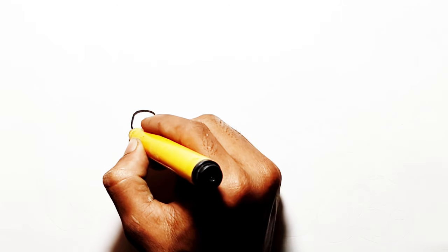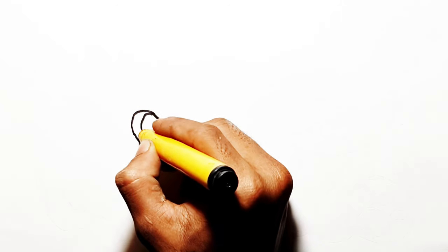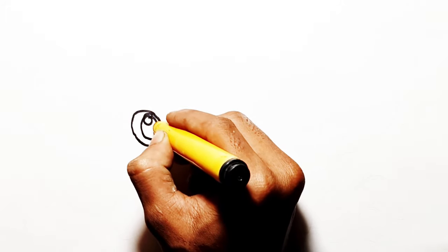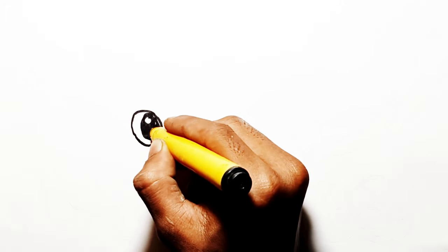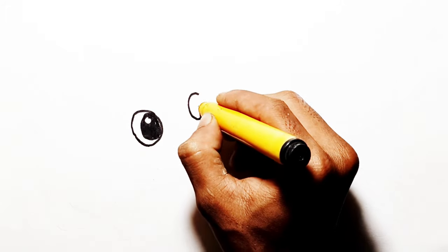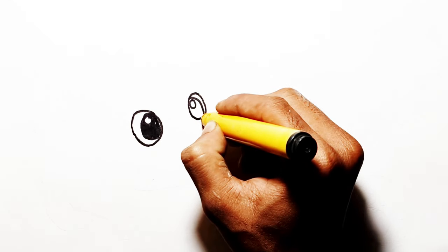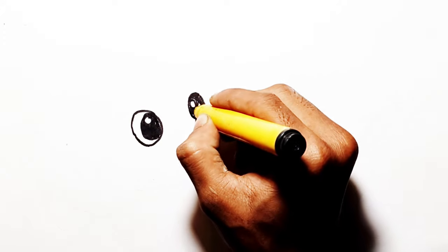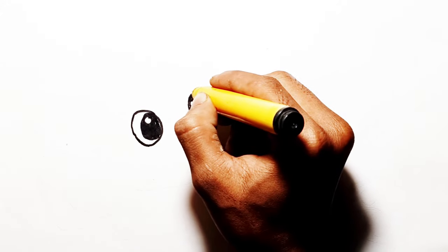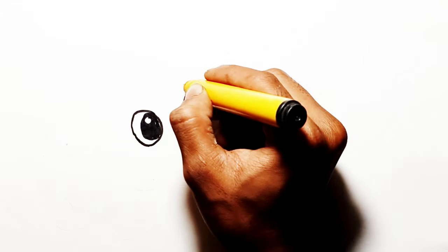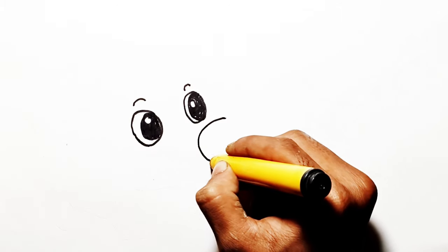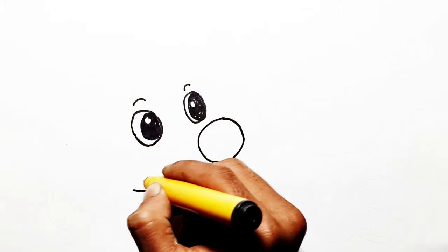Hello everyone, today we are going to draw a pig and teddy bear. First let's start with the pig eyes, eyebrows. Draw a circle for nose then draw mouth and head.